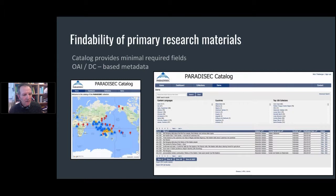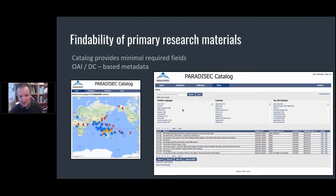We have a catalogue that we've been working on for a number of years. We built our own — unfortunately we didn't find one on the shelf that we could use — but the catalogue allows you to look at material with a geographic point of entry into a faceted search. We have OAI — Open Archives Initiative — and Dublin Core based metadata.